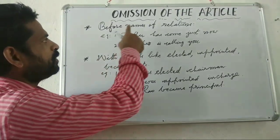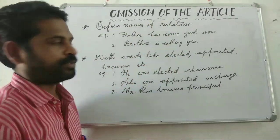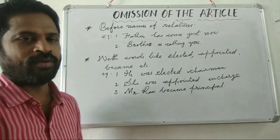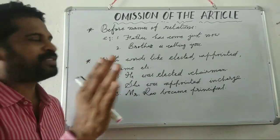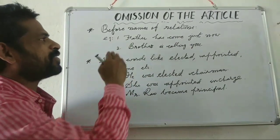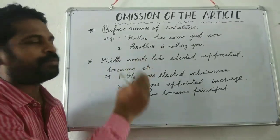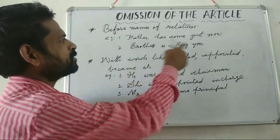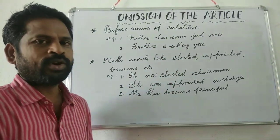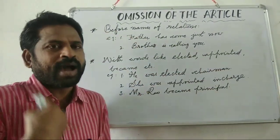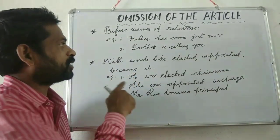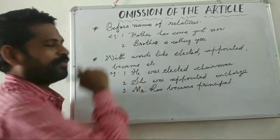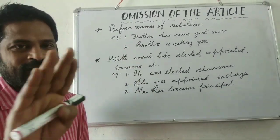Before names of relations: 'Father has come just now' — we don't say 'the father has come just now.' Father means my father. 'Brother is calling you' — your brother or my brother, but not 'the brother is calling you.' So in front of relations, we do not use an article.